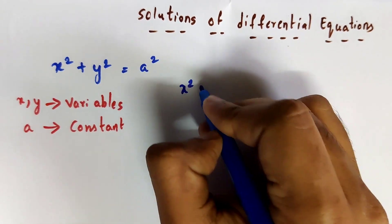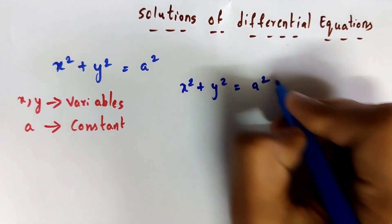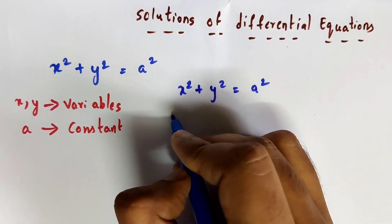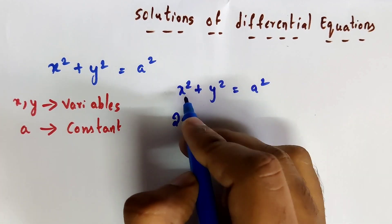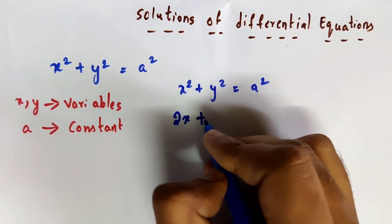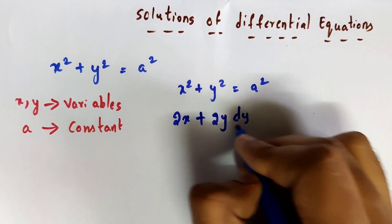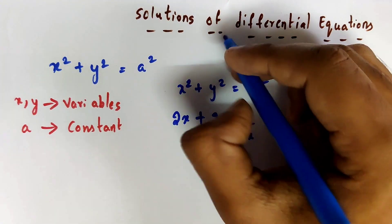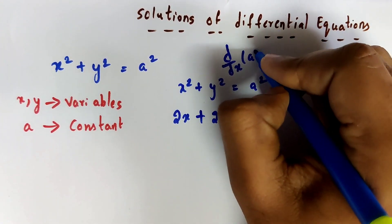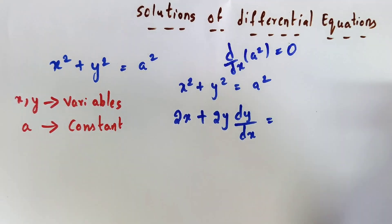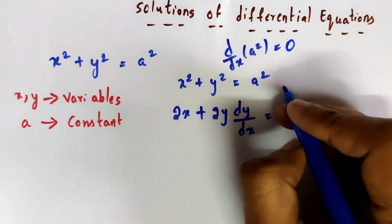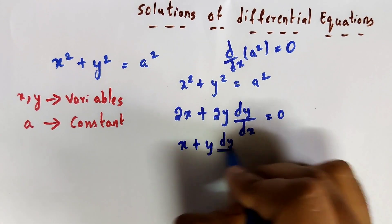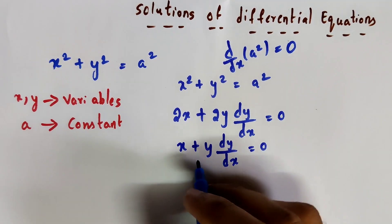We write x squared plus y squared equals a squared. Differentiating with respect to x: 2x times dx/dx plus 2y times dy/dx equals 0 (since the derivative of the constant a squared is zero). Taking 2 common: x plus y times dy/dx equals 0.